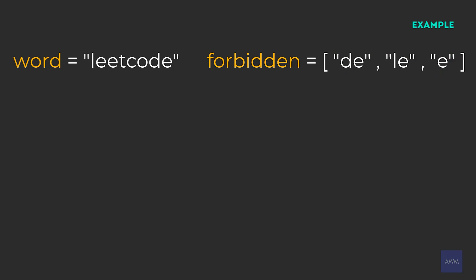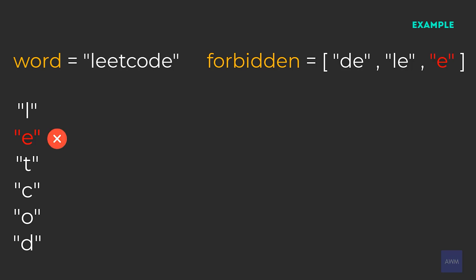Starting with substrings of length one, we have L, E, T, C, O, and D. The only substring that is not valid is character E because that exists in forbidden. So all the other substrings of length one are considered valid.